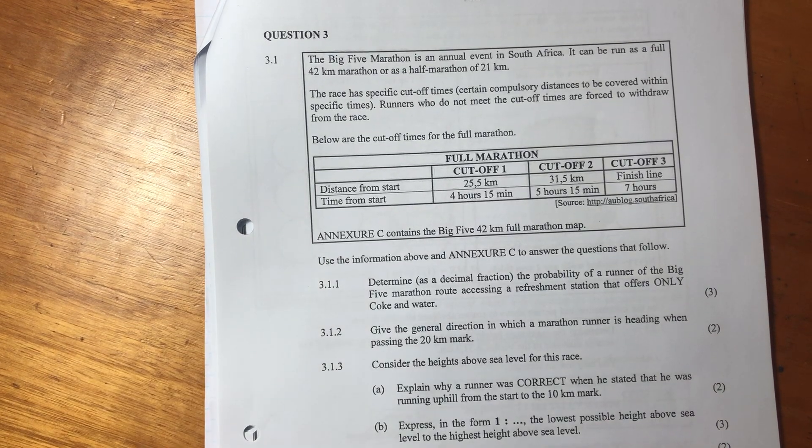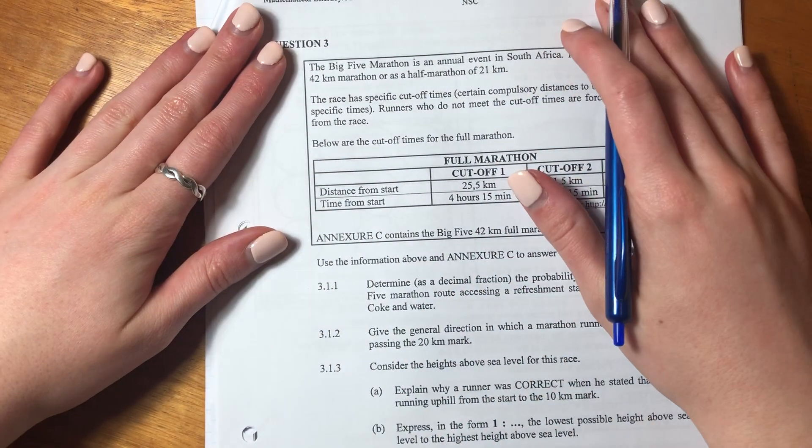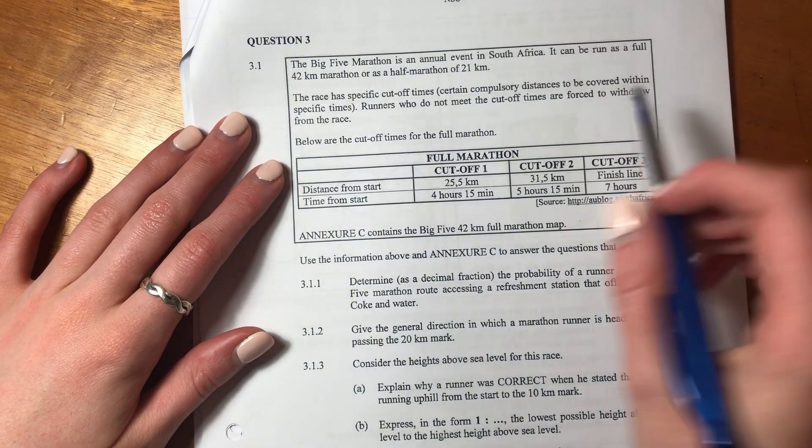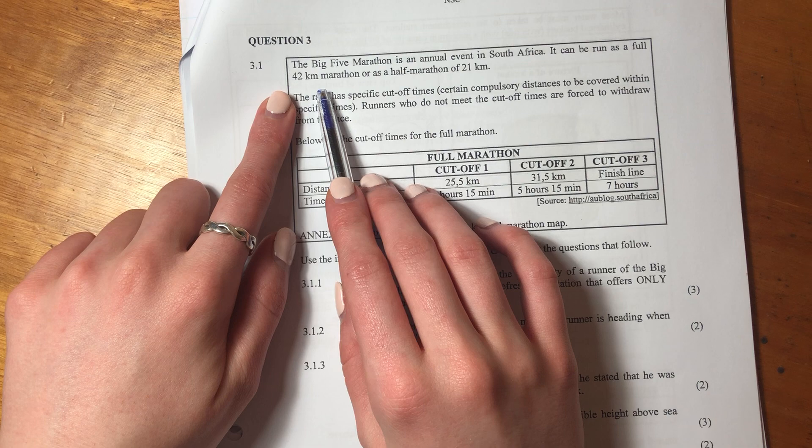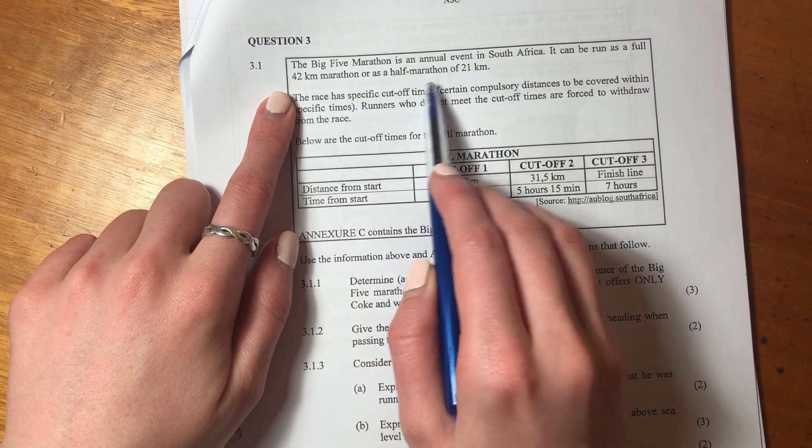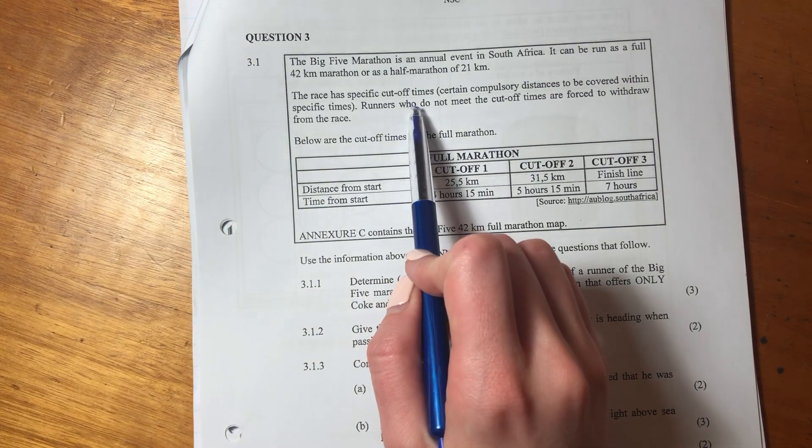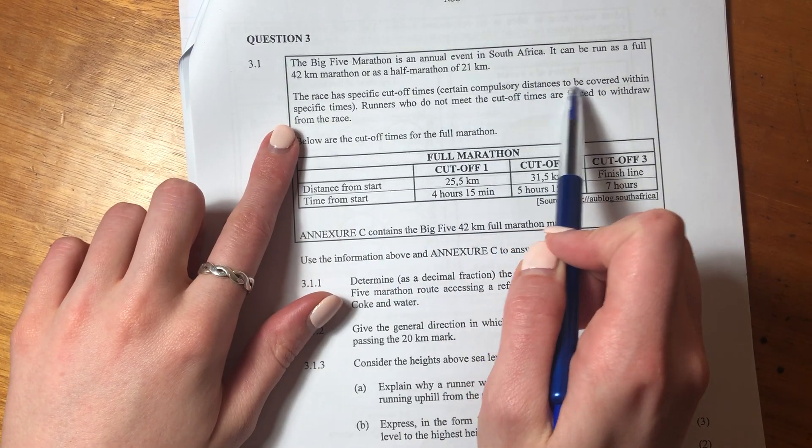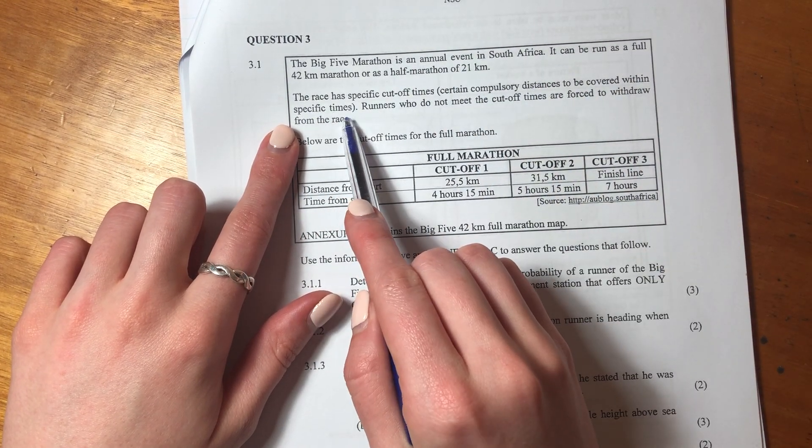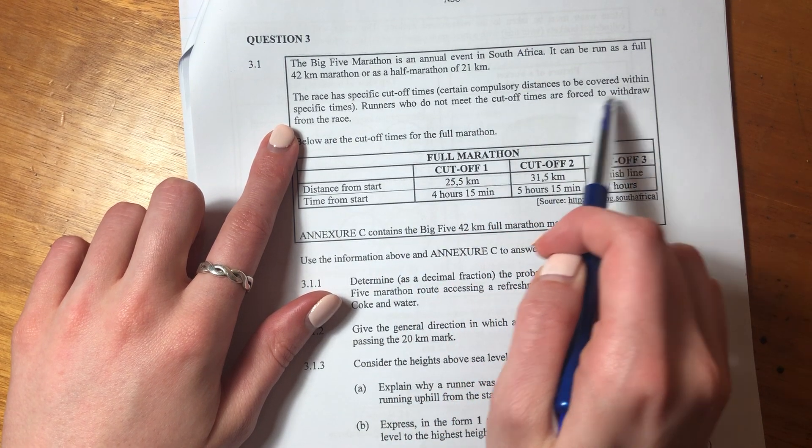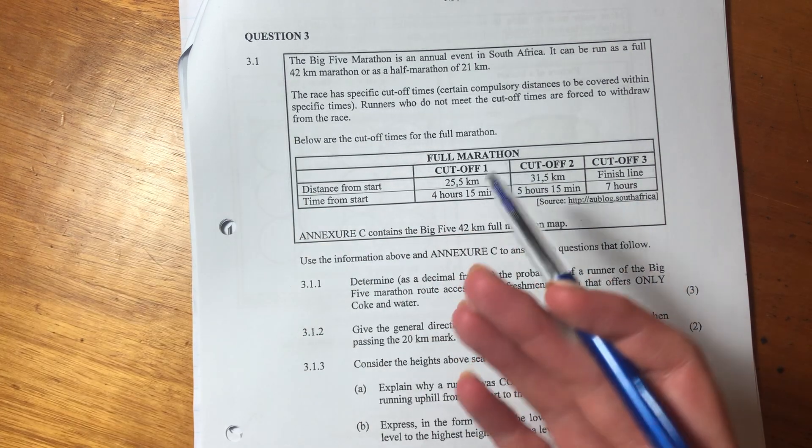Hey guys, so we're moving on to question three. It says the Big Five Marathon is an annual event in South Africa. It can be run as a full 42 kilometer marathon or a half of 21 kilometers. The race has specific cutoff times, certain compulsory distances to be covered within specific times. Runners who do not meet the cutoff times are forced to withdraw from the race.